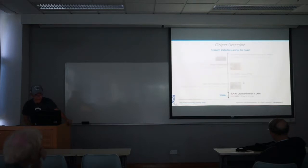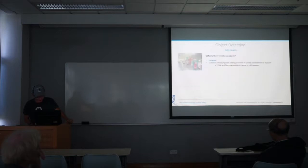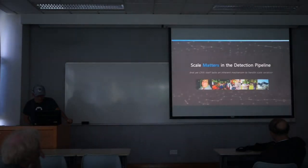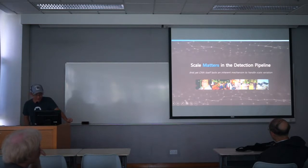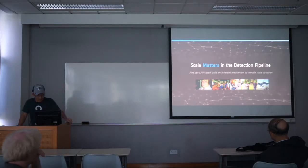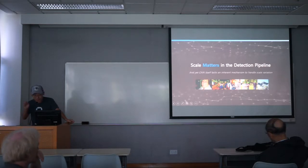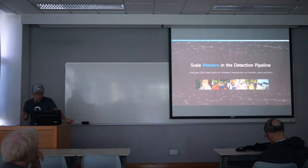Today we present our work on RCN for object detection. In this paper, we argue that scale matters in the detection pipeline. As shown in our test results on a popular face detection dataset, scale varies a lot — from very large faces to very small tiny faces. Currently, CNNs lack an inherent mechanism to handle scale variation.